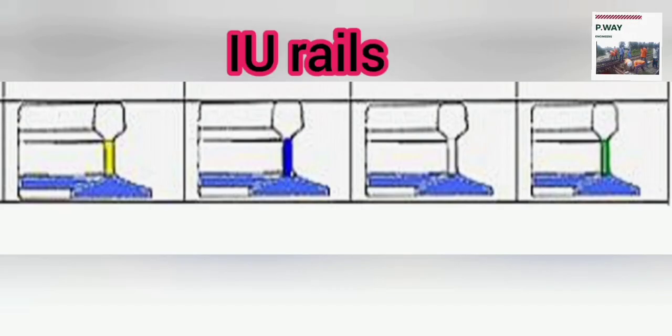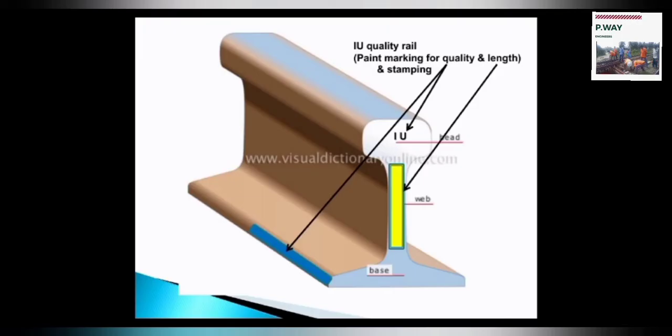This is an industrial use rail painted with blue color for 500mm. An IU mark is also stamped at 15mm size.